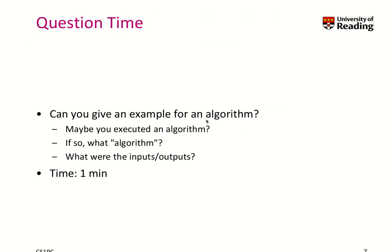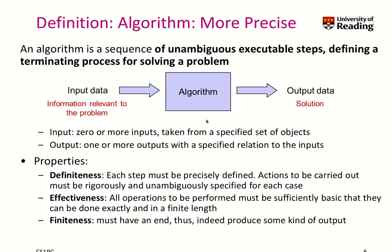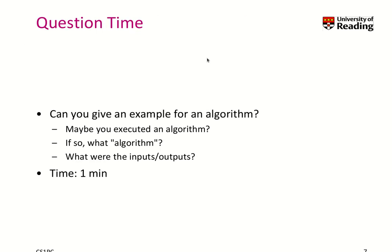Now, looking at those three properties — definiteness, effectiveness, and finiteness — and the input/output diagram, I ask you to think about whether you can give an example of an algorithm. Maybe you have executed an algorithm. If so, what algorithm was it, and what kind of input and output did you use? Think about it for a minute.